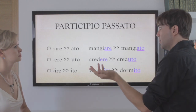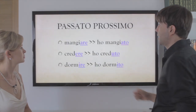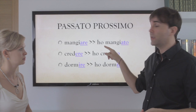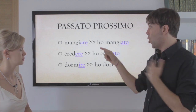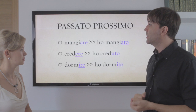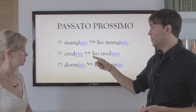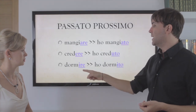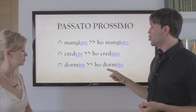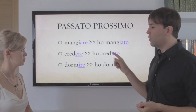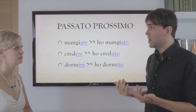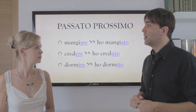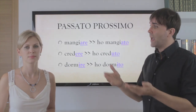Let's form the passato prossimo. Mangiare: ho mangiato — the auxiliary is avere, so io ho mangiato. Credere: again avere, io ho creduto. Dormire: ho dormito. Notice I'm always using ho, which is the verb avere, because most of the time the auxiliary is avere. However, sometimes it can be essere.